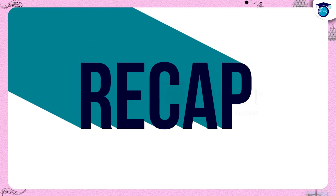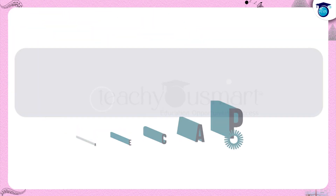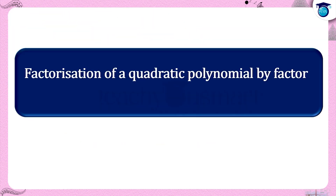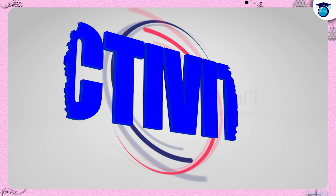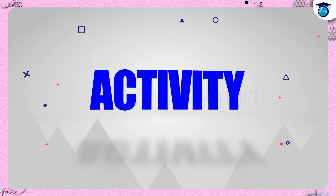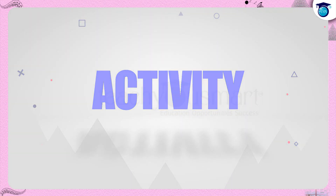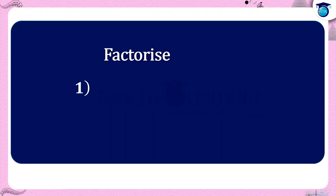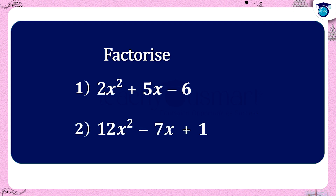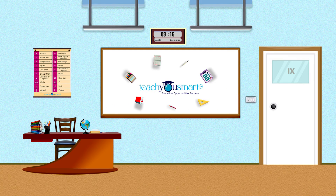Let's recall what we discussed today. We learned the factorization of a quadratic polynomial by the factor theorem. Before winding up, let's check how much you understood by doing an activity. Factorize: first, 2x squared plus 5x minus 6; second, 12x squared minus 7x plus 1. That's all for now. See you all in the next class.